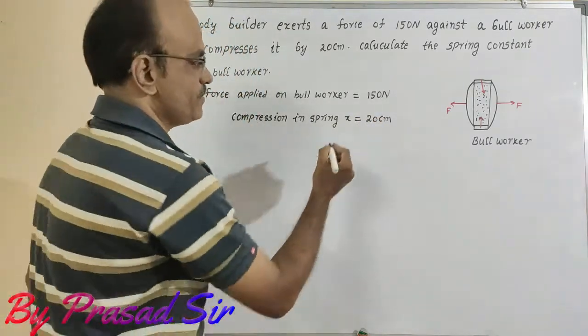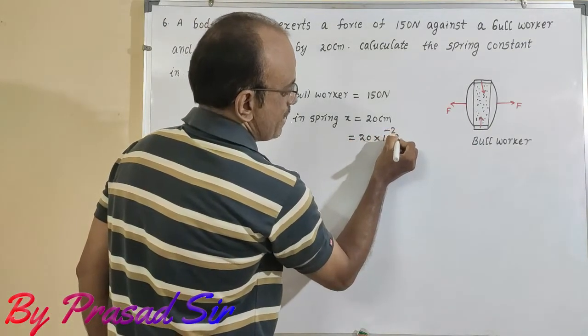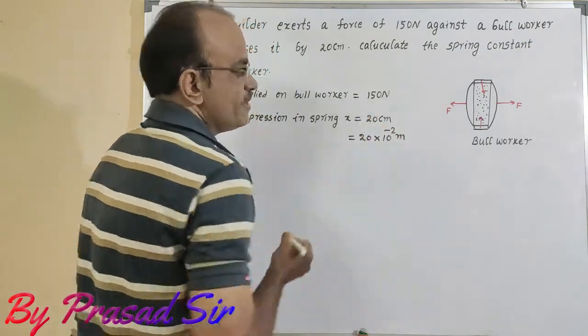But I want to convert into meters. Here 20 into 10 to the power of minus 2 meters.